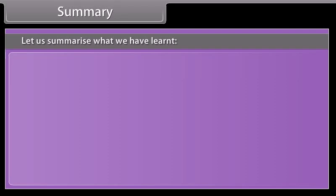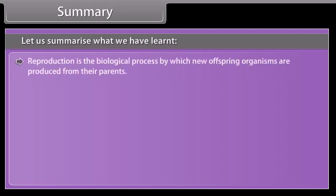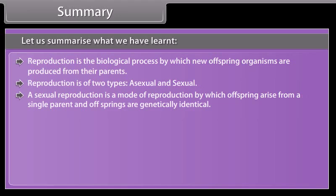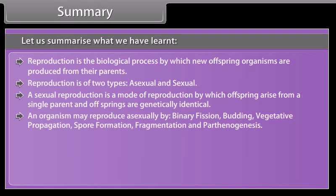Summary. Reproduction is the biological process by which new offspring organisms are produced from their parents. Reproduction is of two types: asexual and sexual. Asexual reproduction is a mode of reproduction by which offspring arise from a single parent and are genetically identical. An organism may reproduce asexually by binary fission, budding, vegetative propagation, spore formation, fragmentation, and parthenogenesis.